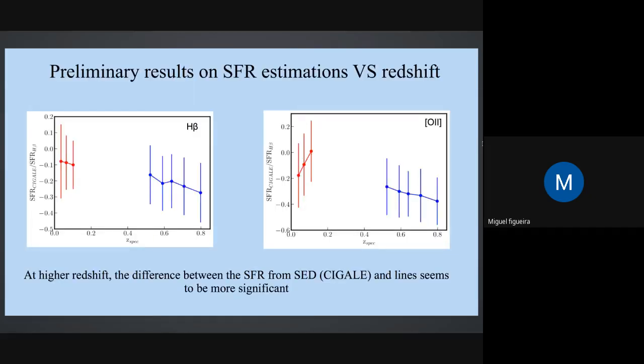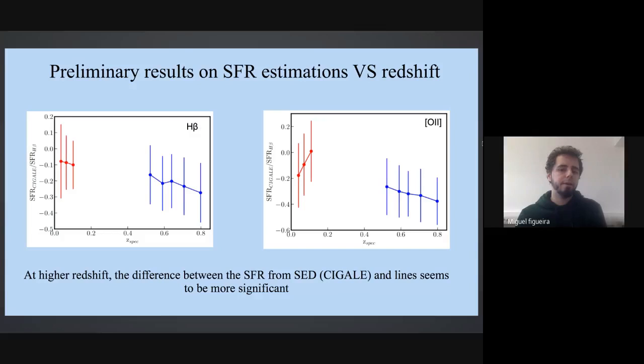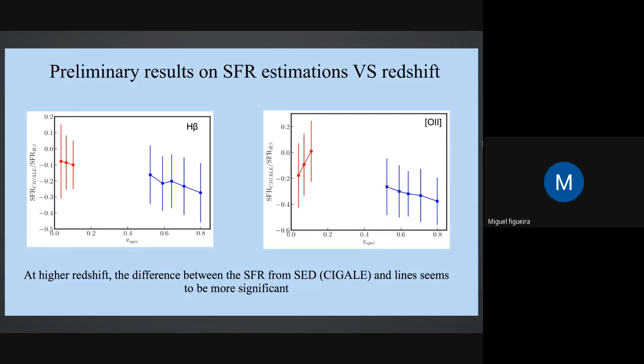These are very preliminary results - SFR estimation between CIGALE and lines versus redshift. This is the ratio of CIGALE to H-beta or CIGALE to O2 - left and right - in function of redshift. We see that between SDSS and VIPERS, so low redshift and intermediate redshift galaxies, there is a decrease of this ratio. We have an overestimation of SFR using lines compared to CIGALE. This is preliminary, and we need to work on it to see if this dependence is true or due to some parameters we used in CIGALE.